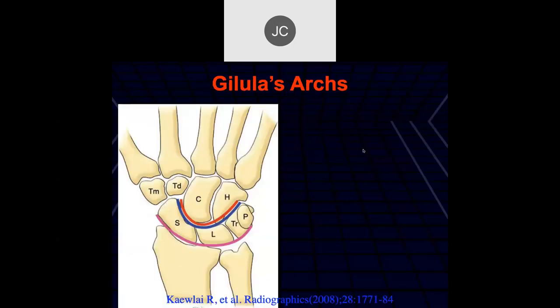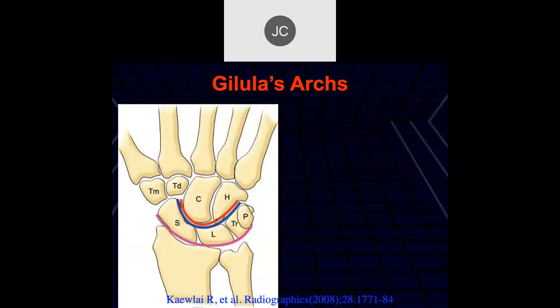Let's talk about trauma. Lou Gilula, one of the more famous musculoskeletal radiologists from St. Louis, defined three arches to evaluate on plain radiographs of the wrist: one along the base of the capitate and proximal hamate, one along the distal aspect of the scaphoid, lunate, and triquetrum, and one along the proximal scaphoid, lunate, and triquetrum. These should be nice smooth lines. If you see an acute jog, you need to be concerned about a ligament rupture producing focal instability or a fracture.